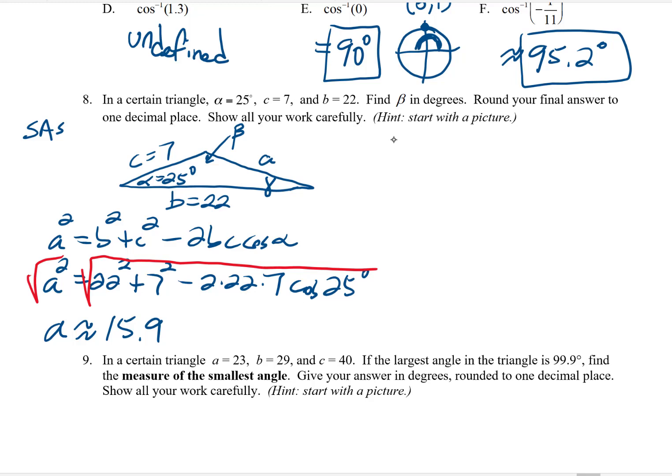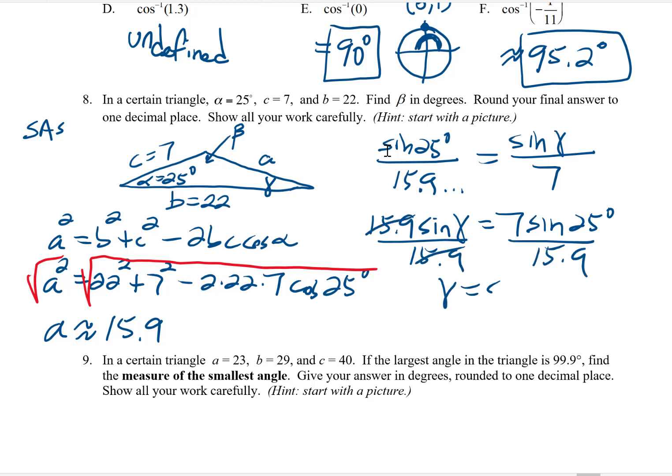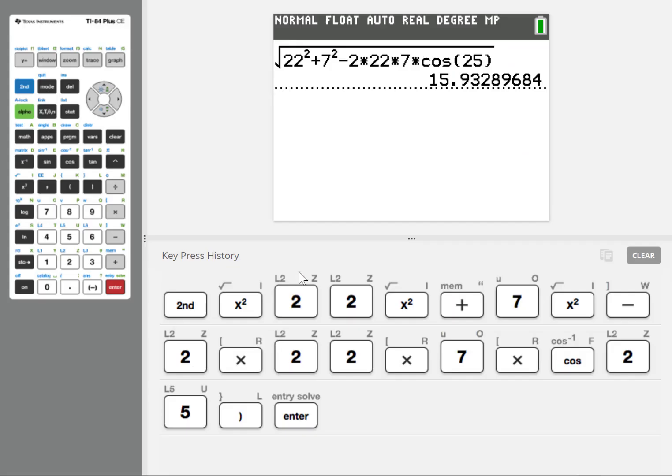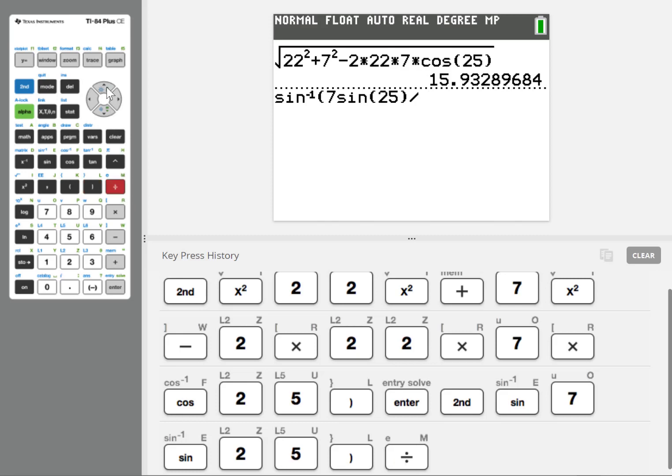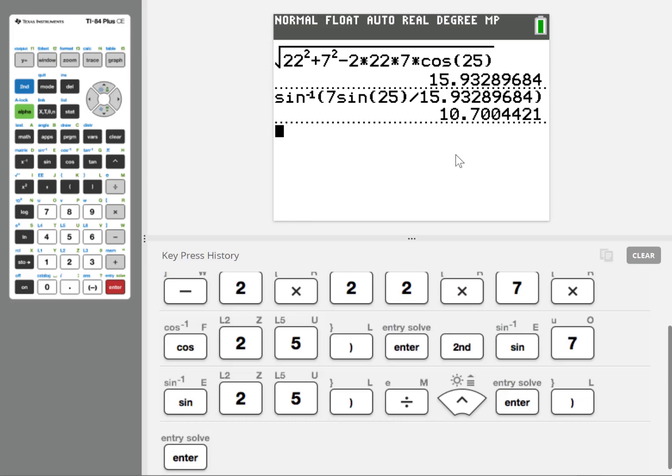I can set up a law of sine statement now that I have a complete pairing. So I can write sine of 25 degrees, the alpha, divided by A, 15.9 dot dot dot, we'll say, equals sine of gamma, the angle I'm going to try to find, divided by 7, which is side C. I'm solving here for gamma. I'm going to get 15.9 sine gamma equals 7 sine 25. I'm going to divide by the 15.9, and then gamma is just inverse sine of that quantity right there, the 7 sine 25 over 15.9. So we'll put that into the calculator. 7 sine 25, and then we're dividing that by that 15.9 number. So I want to grab that. I don't want to use a rounded value there. And this comes out to be about 10.7 degrees.